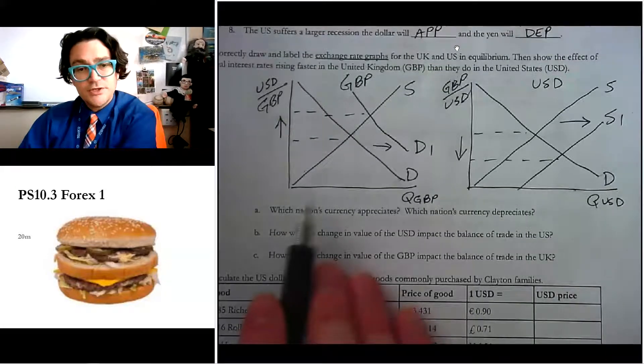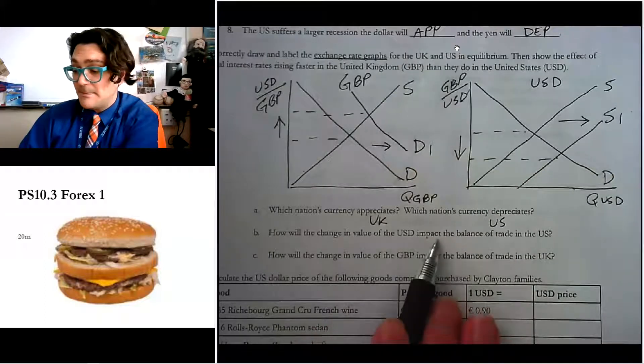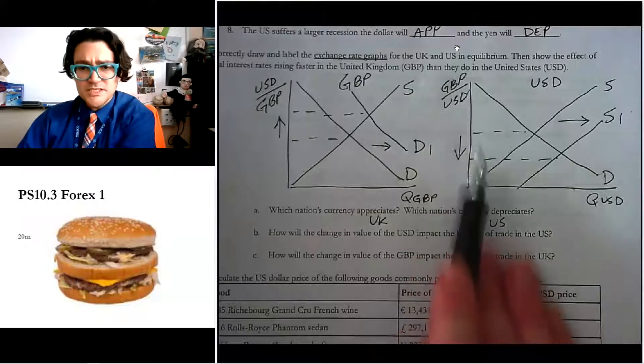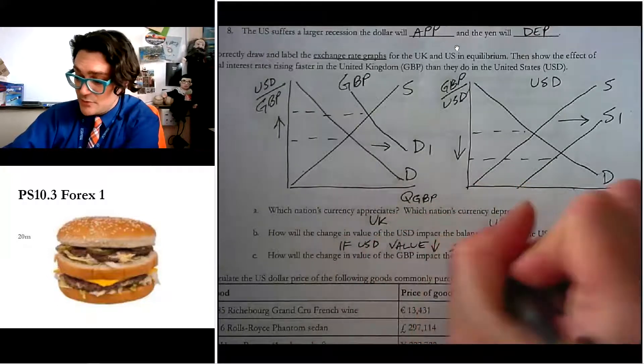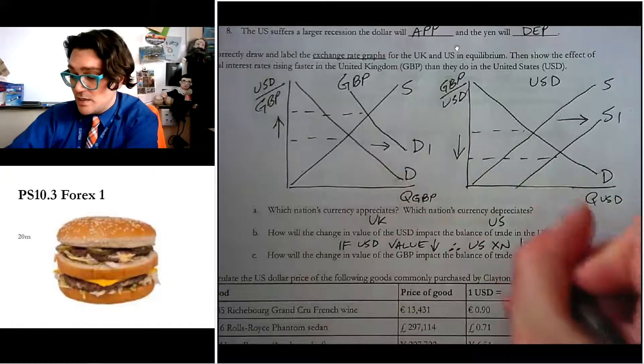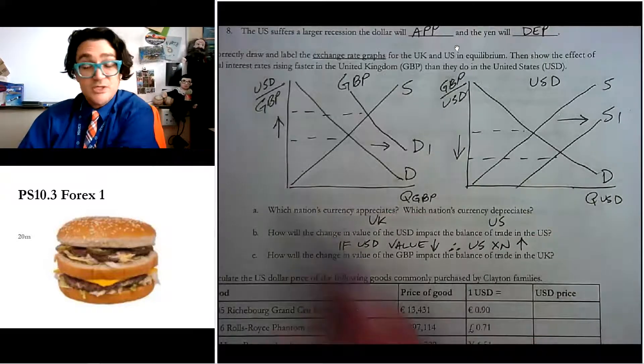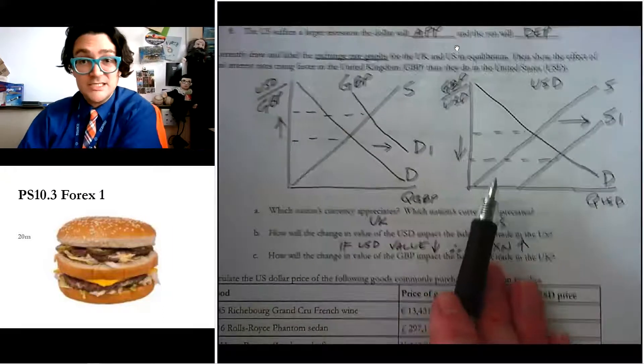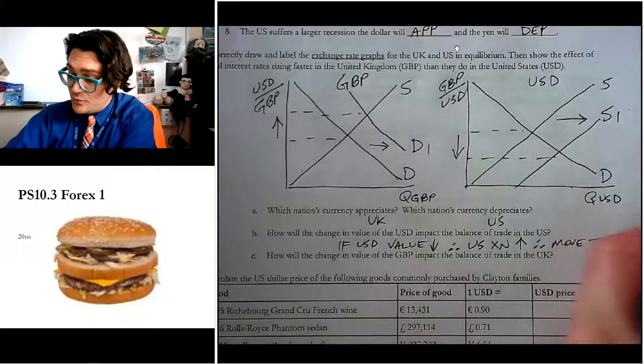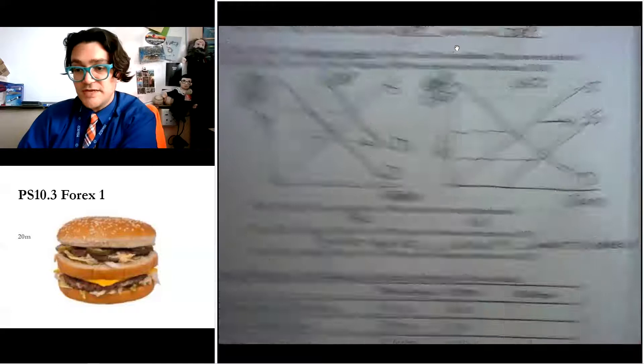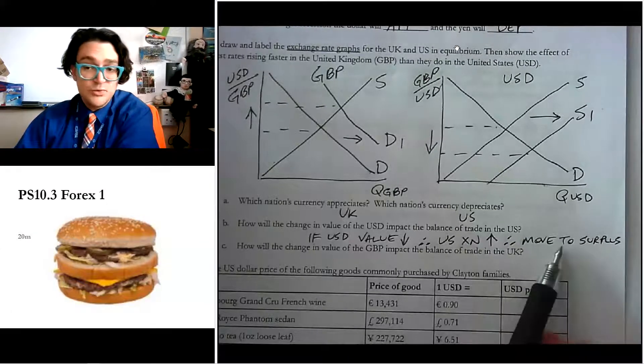Now let's answer these questions on here. Which countries appreciates? That's the UK. Which one depreciates? The US. How will the change in value of the dollar affect the balance of trade in the US? So this is a depreciation. So if US dollar value goes down, we can say that US net exports will go up. Because now US goods and services are cheaper. And so the US, like it's going to have cheaper stuff. And so the British people are going to look at it and go, all the American stuff is on sale. It's a little cheaper. And so it'll cause them to buy more and move our balance of trade, move to surplus.